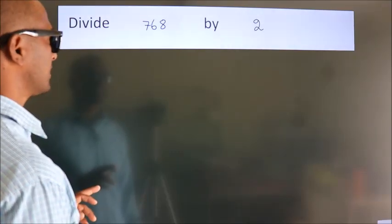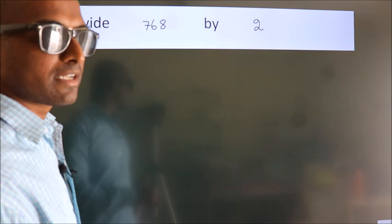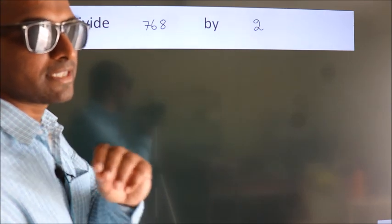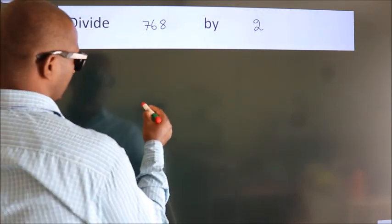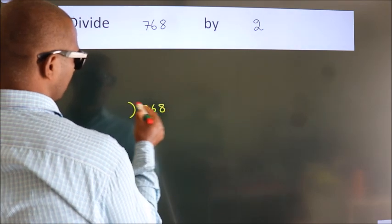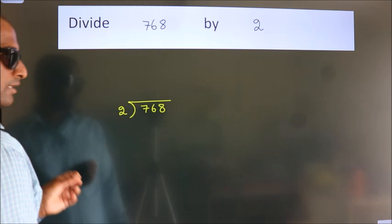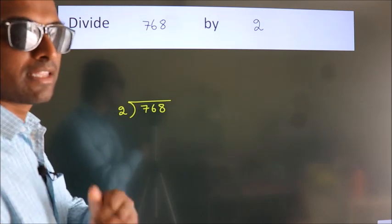Divide 768 by 2. To do this division, we should frame it in this way. 768 here, 2 here. This is your step 1. Next.